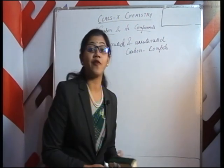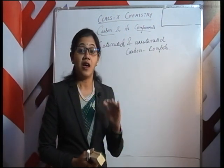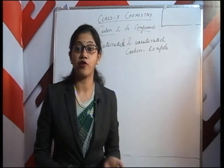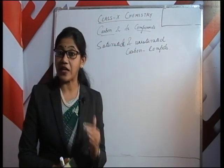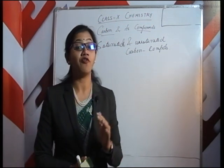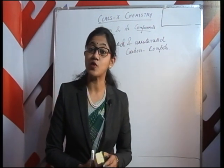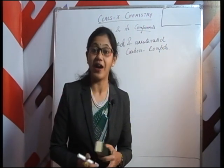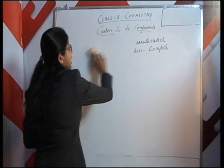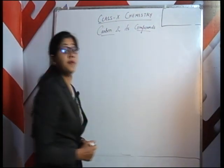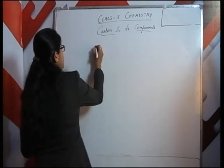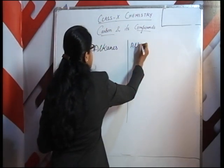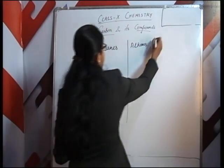So basically we have three different classes of hydrocarbons: alkanes, alkenes, and alkynes. Hydrocarbons are special compounds of carbon which comprise of only hydrogen and carbon — compounds formed only by the combination of carbon and hydrogen are known as hydrocarbons. Let us have a detailed discussion on alkanes, alkenes, and alkynes.